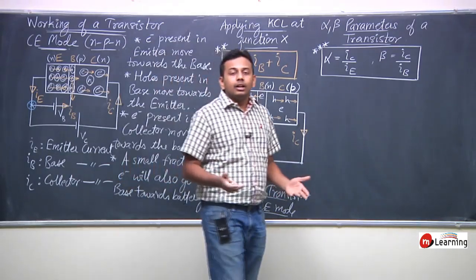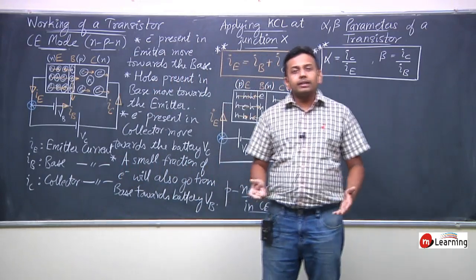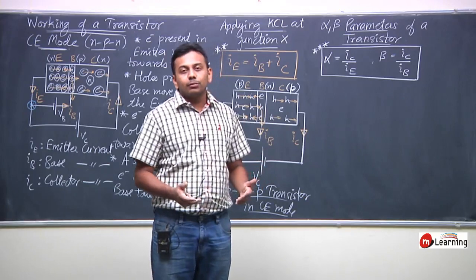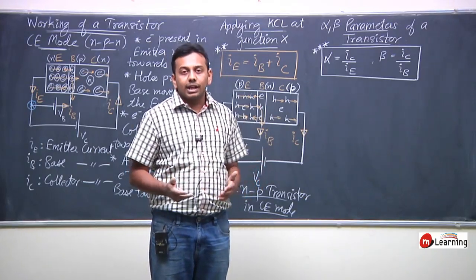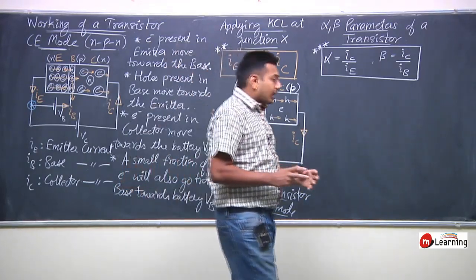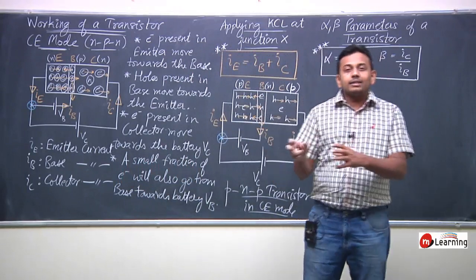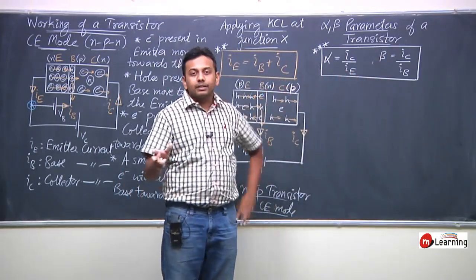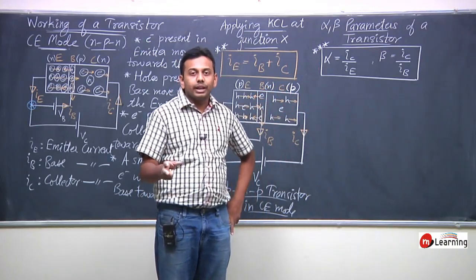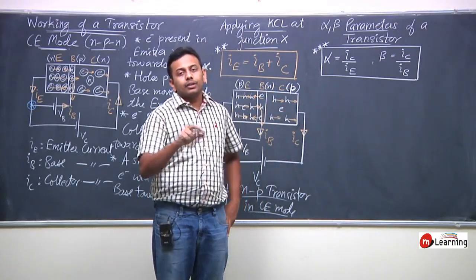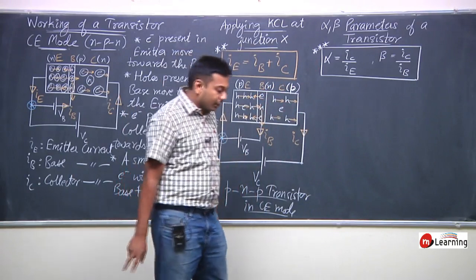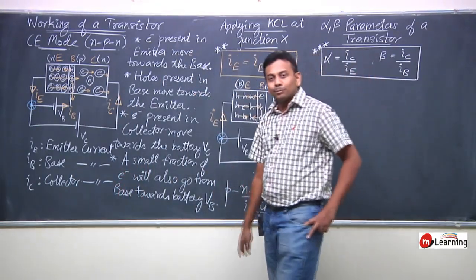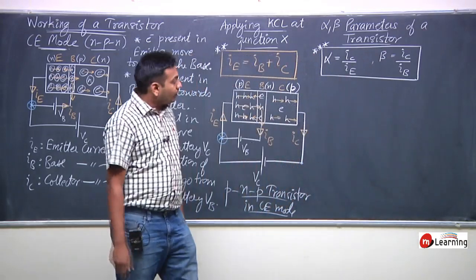Alpha and Beta are in fact related — a particular relation exists between them. If Alpha is constant, then Beta is constant. For a given transistor, both Alpha and Beta will be fixed — practically, we can say they are constant for that transistor.